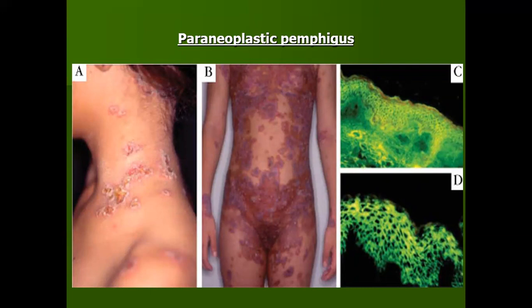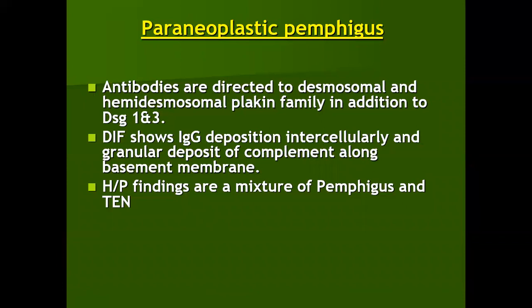Paraneoplastic pemphigus is a group of pemphigus associated with several solid tumors. The clinical picture is a mixture between severe pemphigus vulgaris and Stevens-Johnson syndrome, and the histopathological findings are similarly mixed. Antibodies are directed not only to desmogleins but also to the plakophilin family. DIF shows intracellular IgG deposition and granular deposition of complement along the basement membrane. Histopathological findings are a mixture of suprabasal blistering from pemphigus vulgaris and subepidermal blistering from Stevens-Johnson syndrome/TEN.